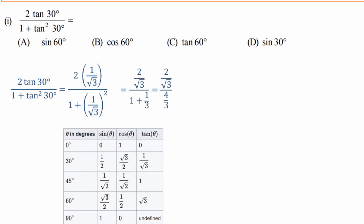Solve and simplify the expression. The numerator becomes 2 by root 3, and the denominator becomes 4 by 3. These are two fractions — numerator and denominator.